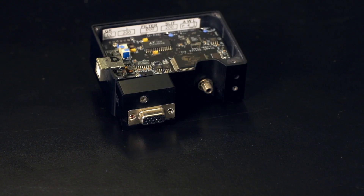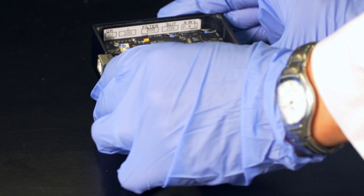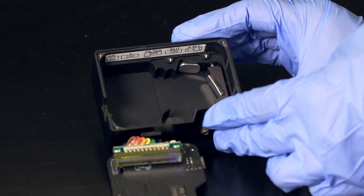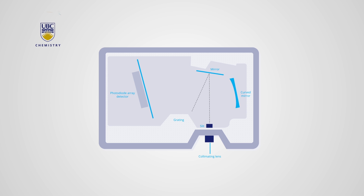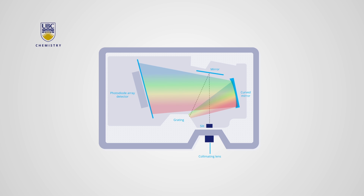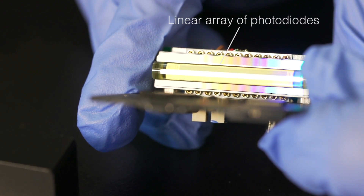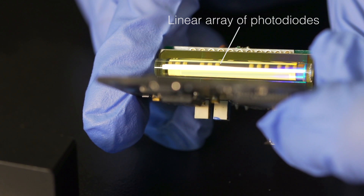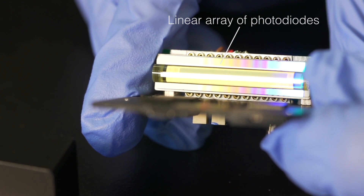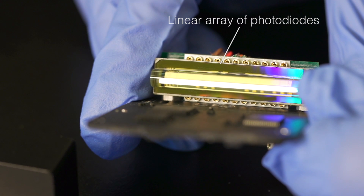This is what the inside of the spectrometer looks like. The light beam enters through a slit, then makes its way to the collimating mirror where it is made into parallel beams. The grating disperses the light beam into component wavelengths and directs it onto a mirror. The dispersed light is reflected over to the detector, which is a charge coupled device, or CCD, comprised of multiple photodiodes arranged in a long strip. The detector collects the light and converts the optical signal into a digital electronic signal.